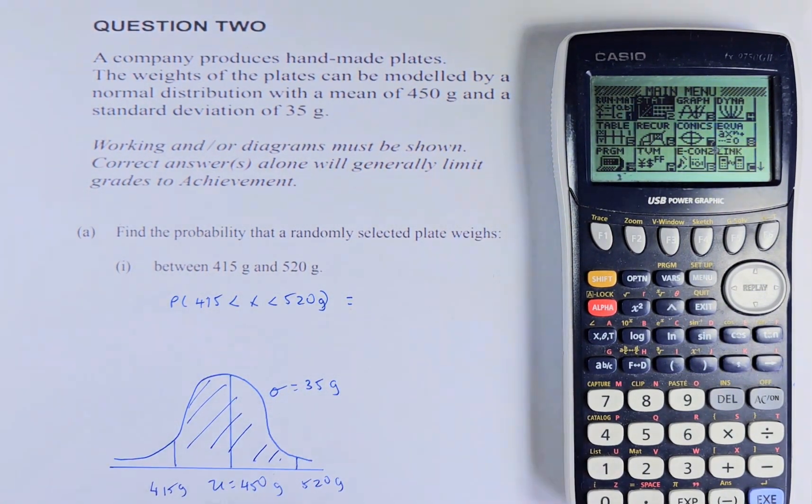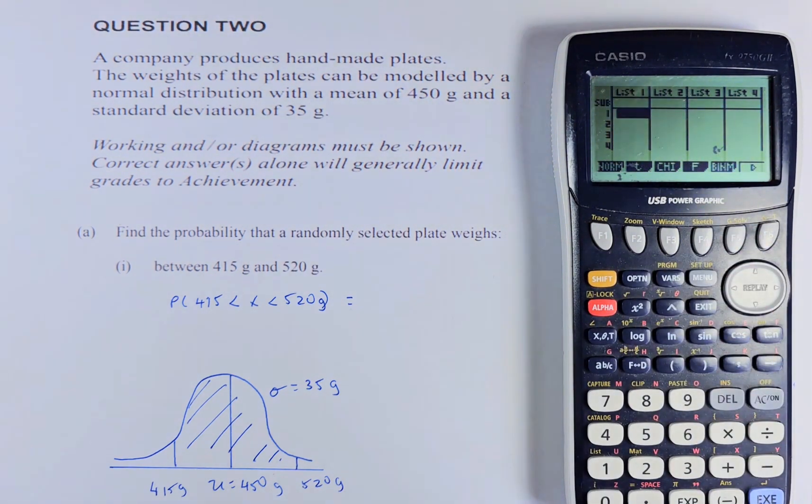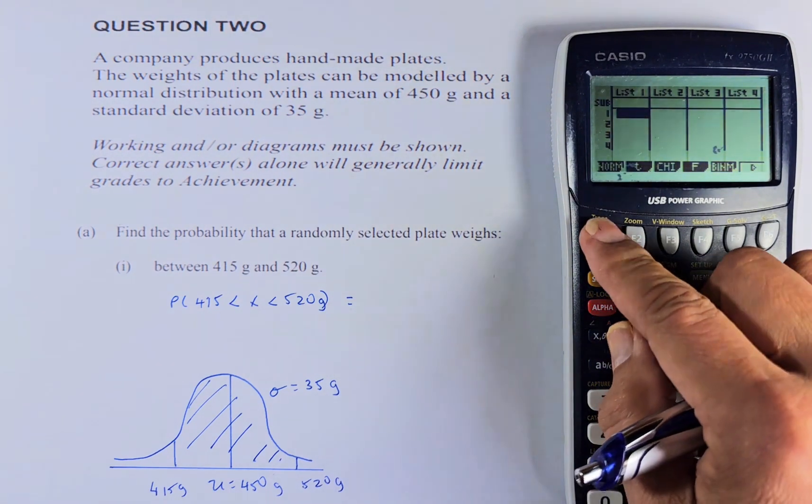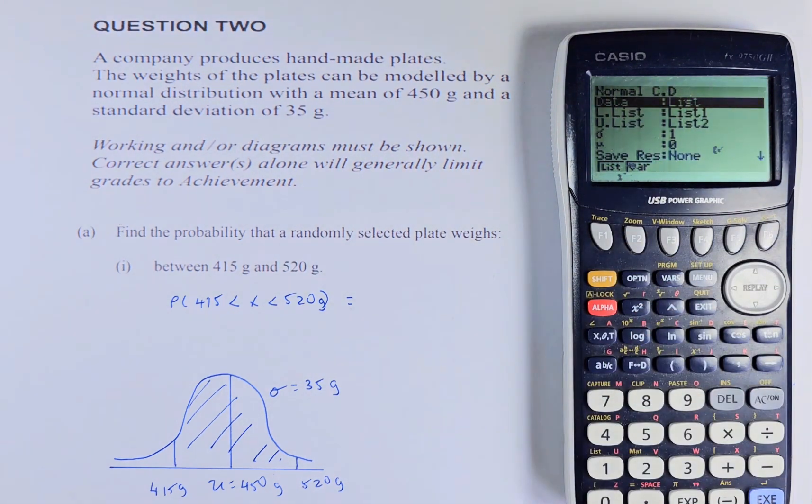Once you know to draw the graph, we are going to put it in the calculator and we're going to solve it easily. So what we're going to do, we're going to do statistics. Then we go to distribution, F5. This time we are doing normal, so F1. Remember, normal, there's no NPD. It's always NCD. So you go to F2.